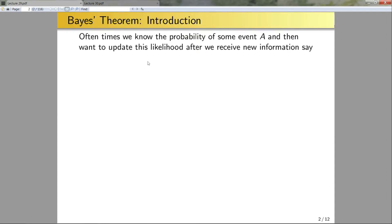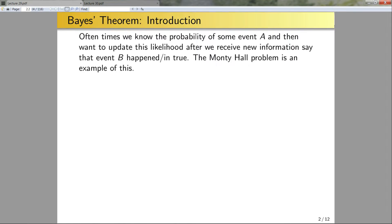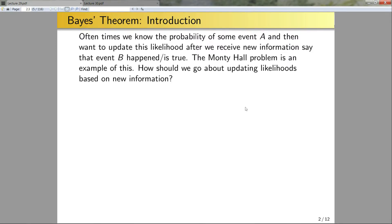Bayes' theorem. Oftentimes I want to know the probability of some event A and then I want to update this likelihood after I receive more information. Say that another event B happened or is true. An example of this is the Monty Hall problem, right?